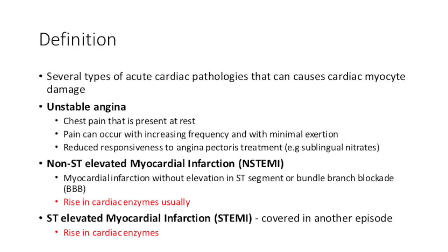So what do we mean by acute coronary syndrome? There are several types of acute cardiac pathologies that can cause cardiac myocyte damage. Unstable angina is one type, where patients get chest pain that is present at rest. Pain can occur with increasing frequency and with minimal exertion, and there is reduced responsiveness to angina pectoris treatments such as sublingual nitrates. Non-ST elevated myocardial infarction, or NSTEMI, is where myocardial infarction occurs without elevations in ST segments or bundle branch block, which you see on an ECG.